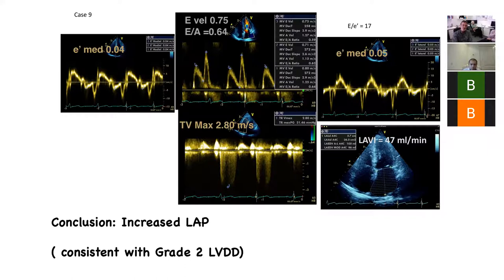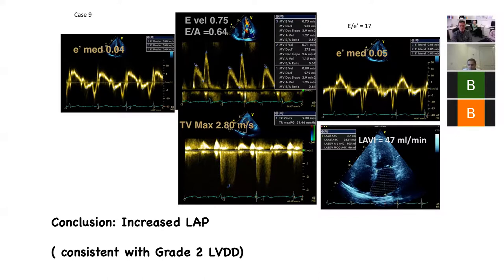Another thing that's always helpful in a quick way is to look at your E-prime/A-prime ratio. The good thing about this is that if it is abnormal — insofar as the A-prime is greater than the E-prime — you are going to have some degree of diastolic dysfunction, as a rather crude way of looking at it.